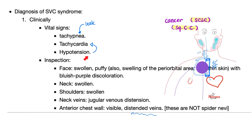On inspection, the patient's face is swollen, puffy, and having plethora with bluish-purplish discoloration. The neck is swollen, shoulders swollen, neck veins show jugular venous distension, and don't forget the collaterals that you will see on the patient's chest.